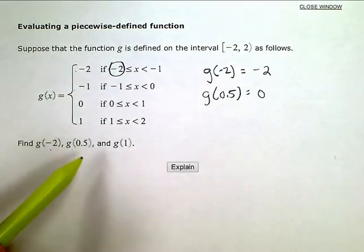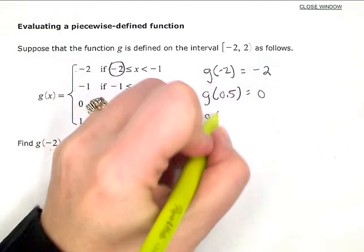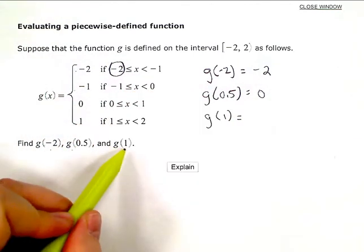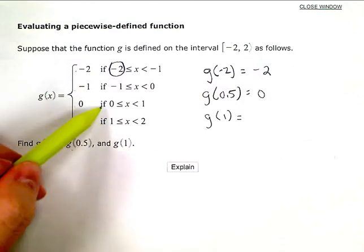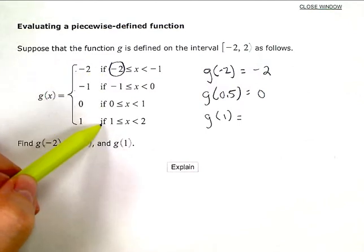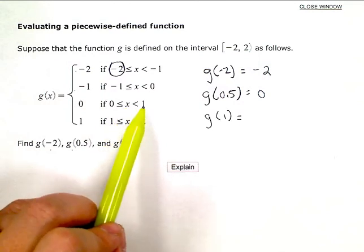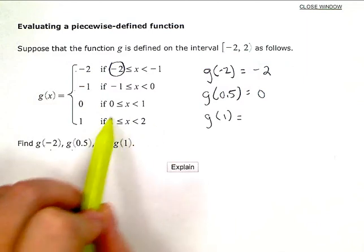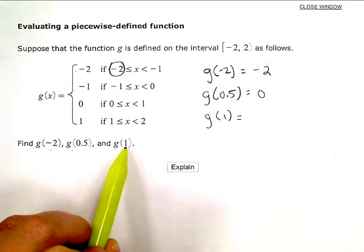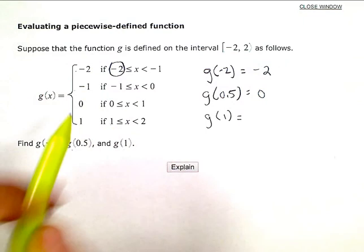And g of 1, so my input is 1 or my x value is 1. So I need to find the interval where x can be equal to 1. Now I do have 1 here, but x is strictly less than 1. I have to go down here for x to be able to be equal to 1. So I'm looking in this interval. So if x is between 1 and 2, including 1, then my output or my function value is 1.